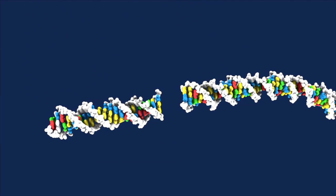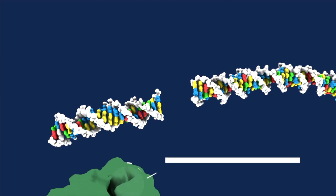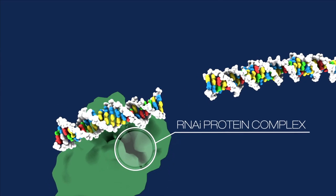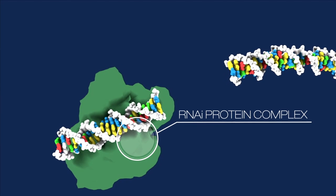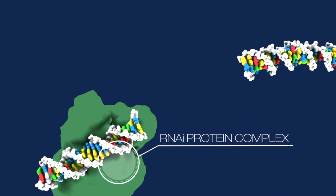Dicer doesn't stop all the viral RNA from getting through, but it doesn't need to, because RNAi has a great trick up its sleeve. It uses those chopped up pieces of RNA as weapons against the virus.